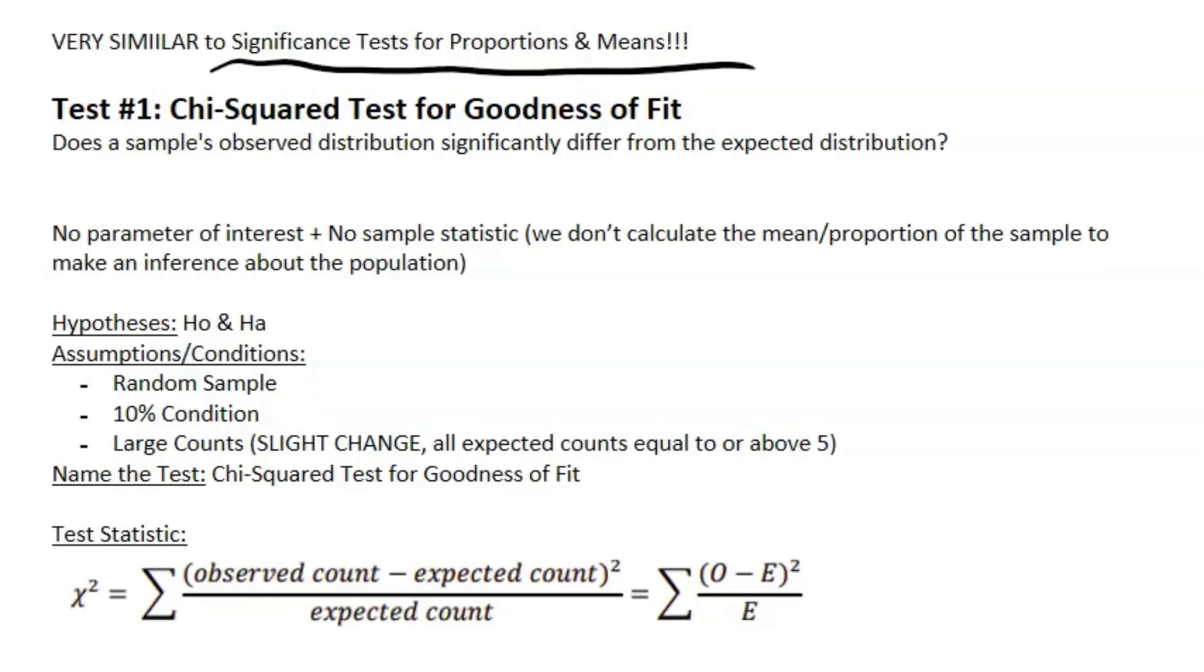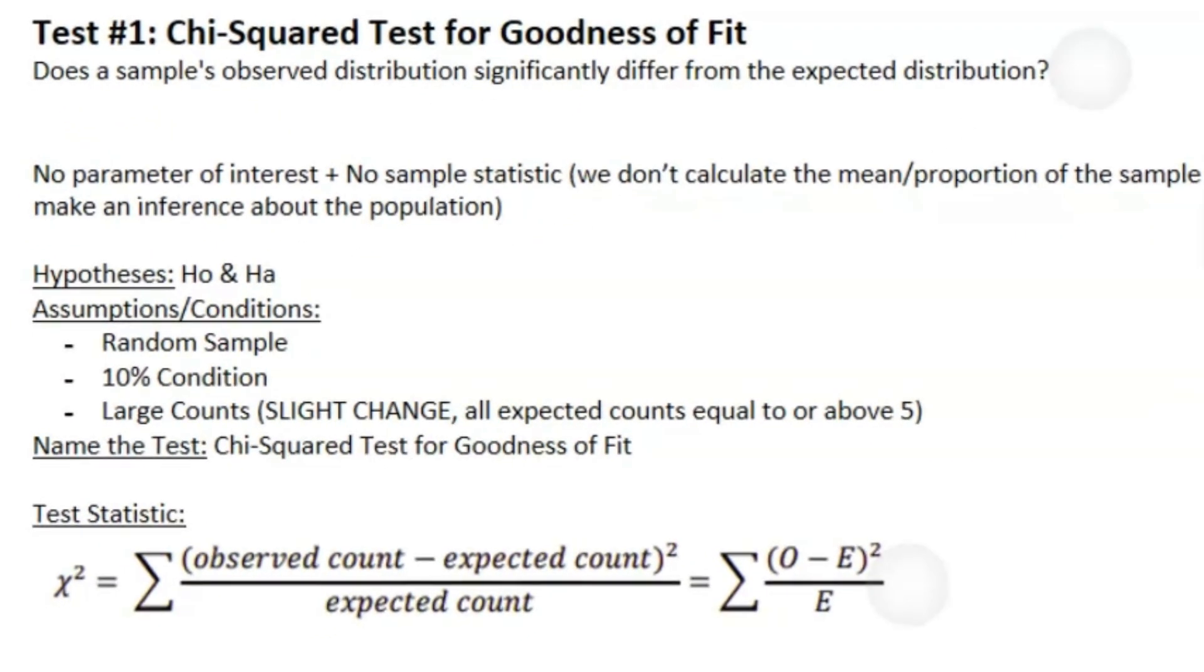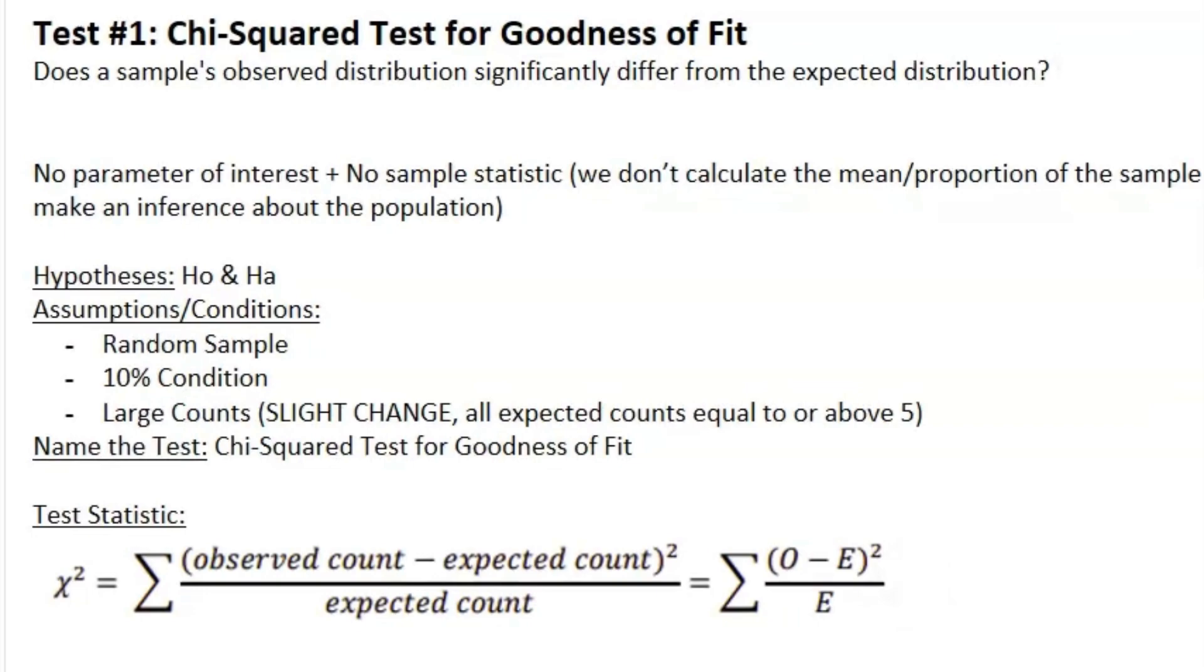The rest of AP Stats is pretty similar, so if you get one down, you pretty much get the others down too. But there are some nuances you have to know with chi-squared. This thing is only two to five percent of your AP exam, so it's not really that important. You're probably not going to do a full chi-squared test for your FRQs; this is more likely to show up as multiple choice.